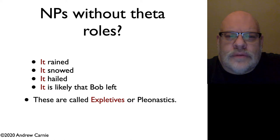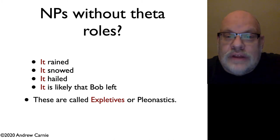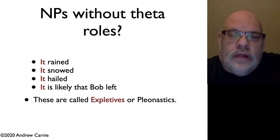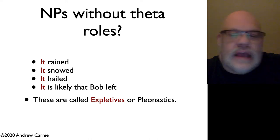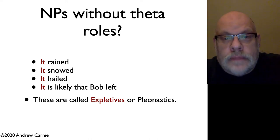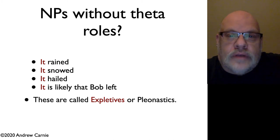"It rained" is almost the same thing as "there was raining"; "it snowed" is the same as "there was snowing." If you speak a Romance language like Spanish, you'll know that in those languages you don't put an "it" in at all — you just say the verb to indicate that it rained. We call noun phrases like this — ones that don't seem to have meaning — expletives, or another term, pleonastics. You also see expletives in forms like "there was a boy in the room" — the "there" there is also a kind of expletive.